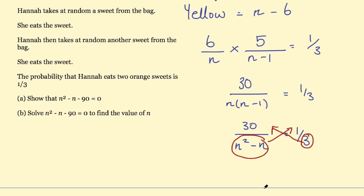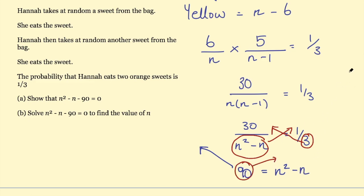I cross-multiply: three times 30 gives 90 on the left, and (n squared minus n) times one gives n squared minus n on the right. So I have 90 equals n squared minus n. Subtracting 90 from both sides gives n squared minus n minus 90 equals zero.